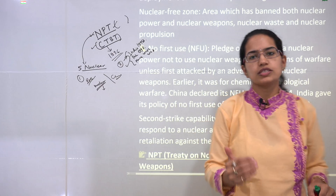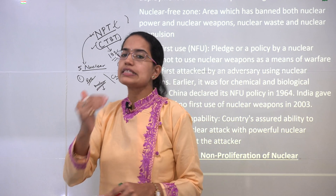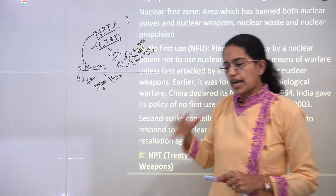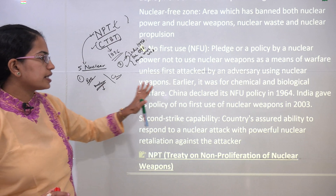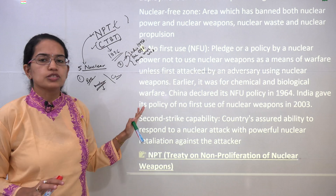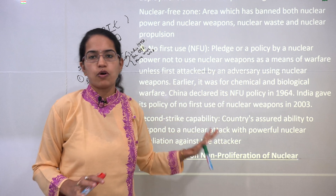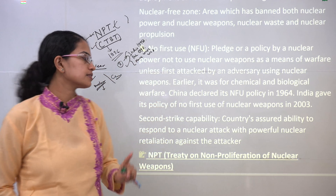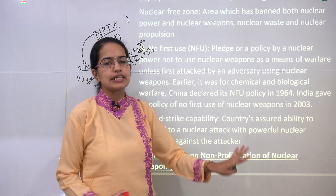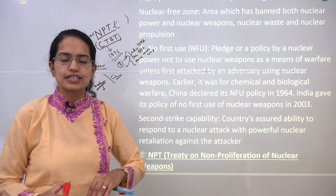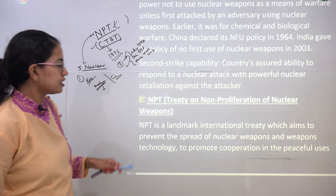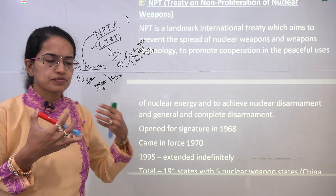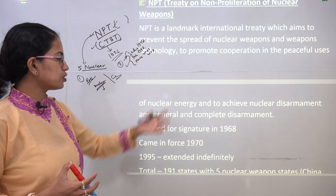No First Use policy means a country will not use nuclear weapons first. Previously this applied mainly to biological and chemical weapons. China signed the NFU policy in 1964. India signed it in 2003, but only for nuclear weapons — which is very important to note. Second strike capability is a country's ability to strike back once it has suffered a nuclear attack.